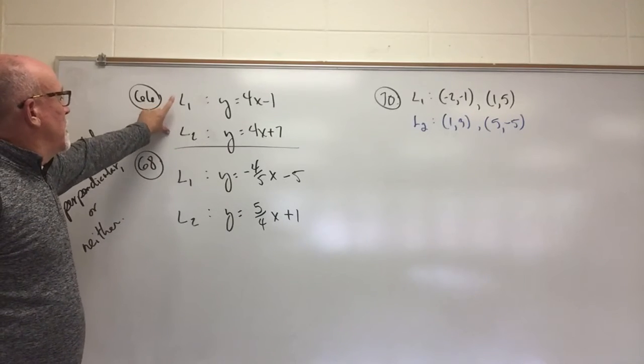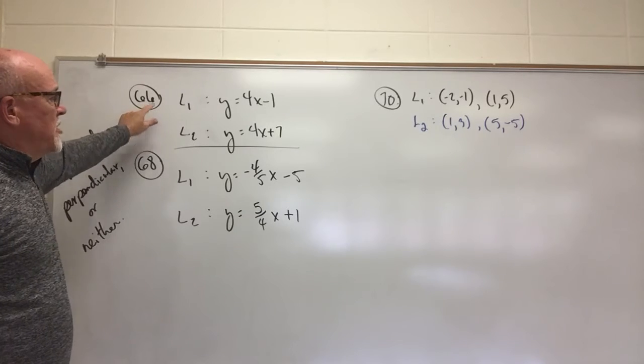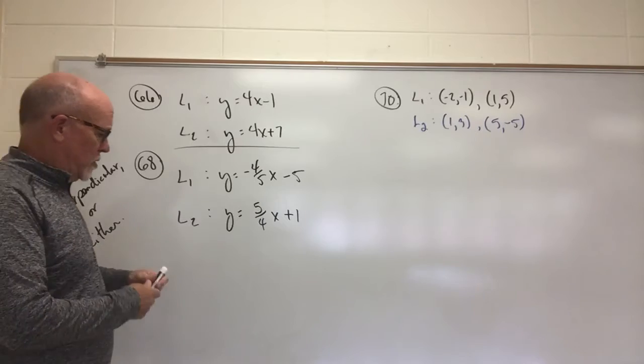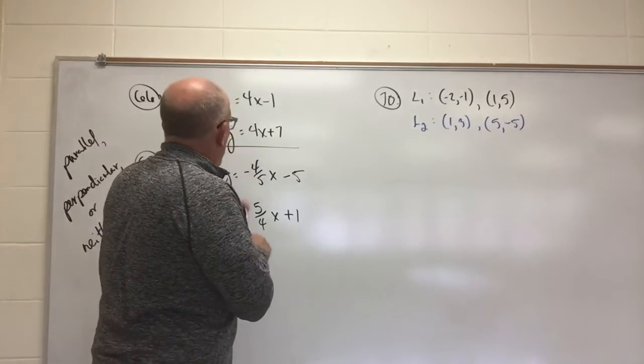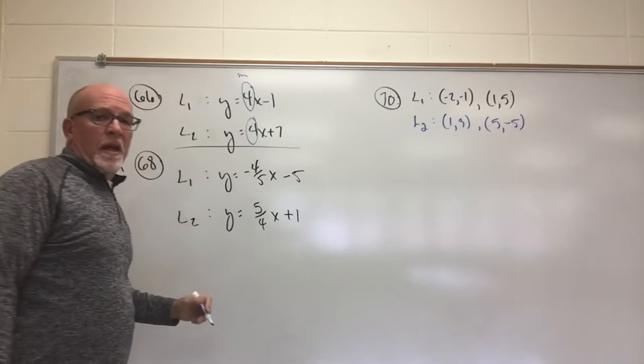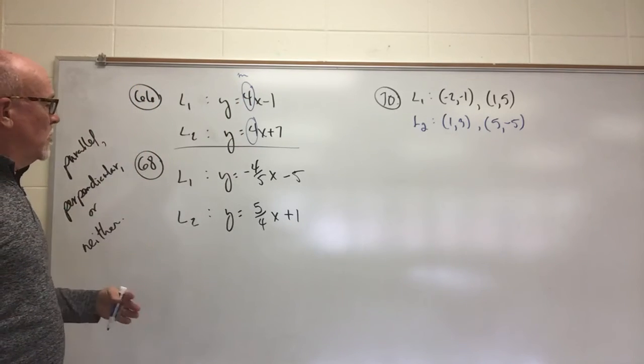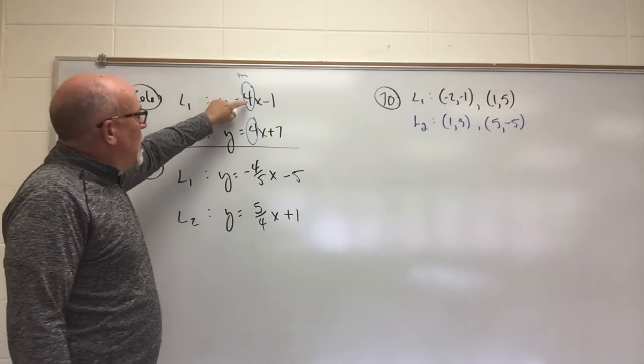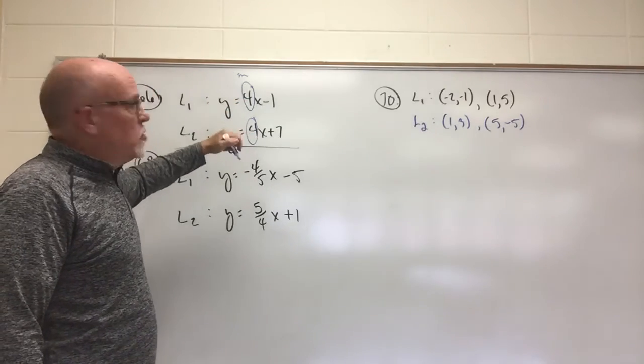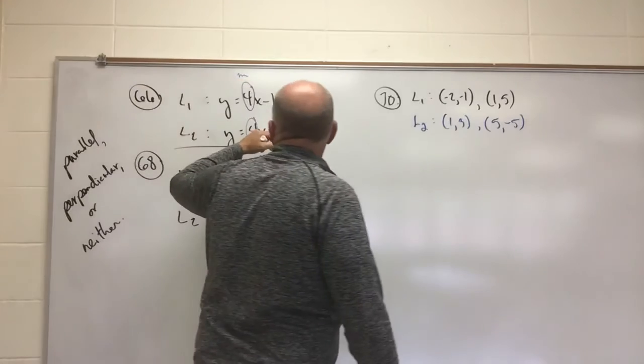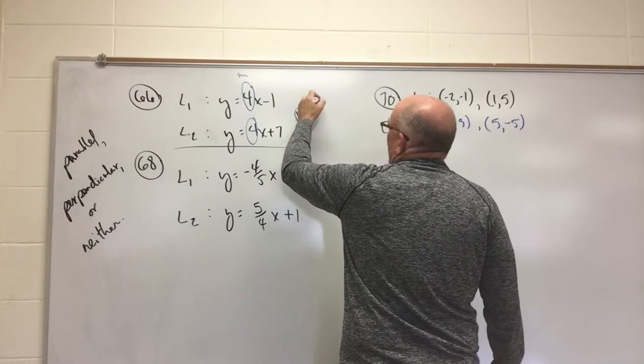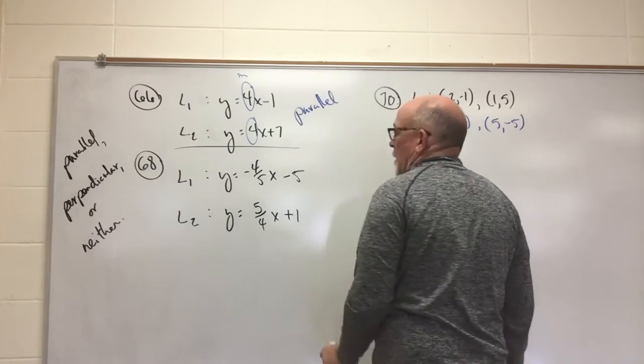So let's look at line 1 and line 2 in exercise 66. We're examining the slope of the lines. Nothing else matters. So we're looking for the slope. The slope is the m, which appears in front of the x. It's the coefficient to the linear term. These two values are exactly the same. Matter of fact, they are both 4 over an understood 1. When the lines have the same slope, the lines are said to be parallel.